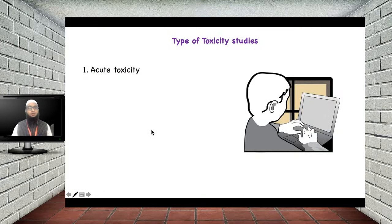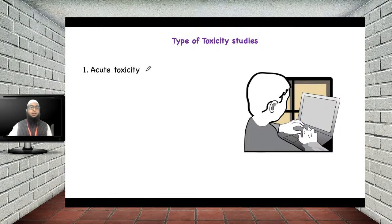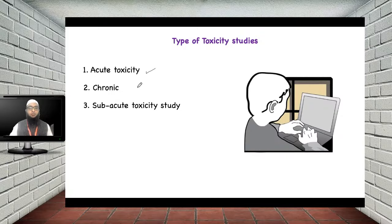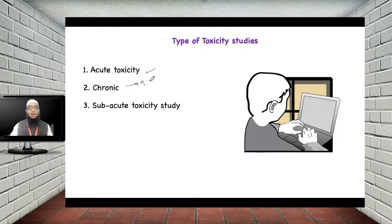There are different types of toxicity studies. The first is acute toxicity study, where a single dose of drug is given to observe its toxic effect. The second type is chronic and sub-acute toxicity study, where you give the drug repeatedly. In chronic study, you give the drug for 90 days; in sub-acute toxicity study, generally for 28 days.